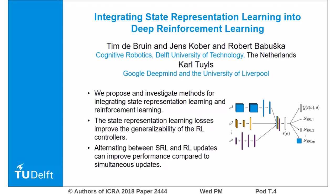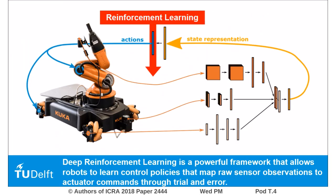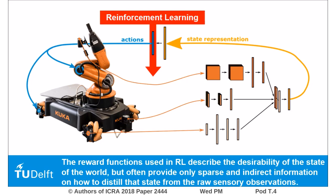Hi, I'm Tim and this work is on integrating state representation learning into reinforcement learning. Deep reinforcement learning is a powerful framework that allows robots to learn control policies that map raw sensor observations to actuate the commands through trial and error. The reward functions used in reinforcement learning describe the desirability of the state of the world but often provide only sparse and indirect information on how to distill that state from the raw sensory observations.